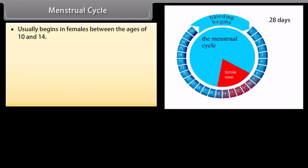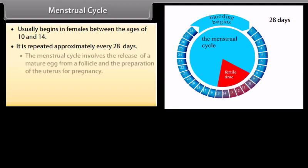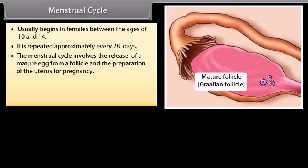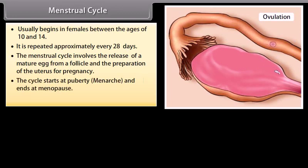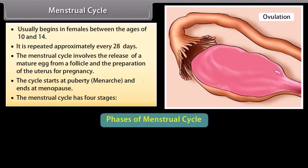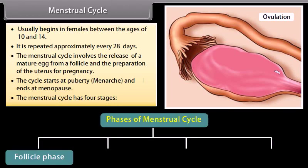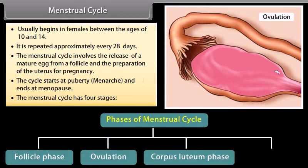Menstrual cycle: it usually begins in females between the ages of 10 and 14, and is repeated approximately every 28 days. The menstrual cycle involves the release of a mature egg from a follicle and the preparation of the uterus for pregnancy. The cycle starts at puberty or menarche and ends at menopause. The four phases of the menstrual cycle are: follicle phase, ovulation, corpus luteum phase, and menstruation.